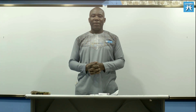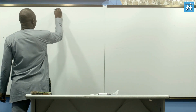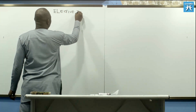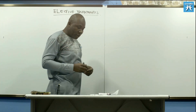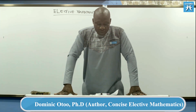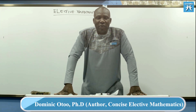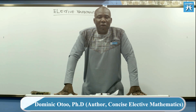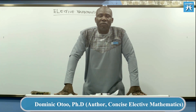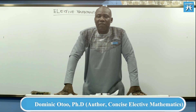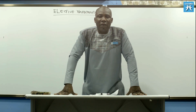Welcome to Elective Maths class. In senior high school we have two forms of mathematics. The first one is called General Mathematics, what we usually call Core Mathematics. Core Mathematics is meant for every student who goes through secondary education. It is General Mathematics that prepares you to do everyday transactions, and that is why everybody is required to do it. Then we also have Elective Mathematics.